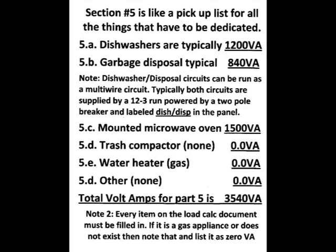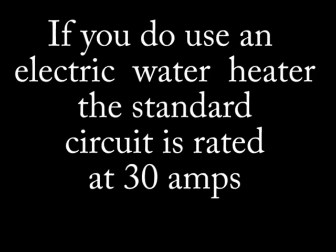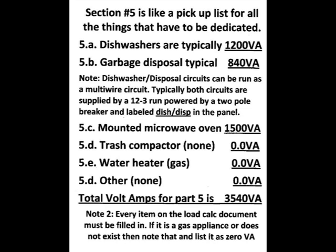Section 5 is like a pickup list for the things that have to be dedicated but aren't always listed on the load calcs, though they're required in the code book. Dishwashers are typically 1,200 volt amps. Garbage disposals are about 840 volt amps. Mounted microwave ovens are always 1,500 volt amps. Don't leave anything blank on your load calculation application — if you don't have it, just write 'none' and put in zero volt amps. No trash compactor: zero volt amps. Water heater is gas: zero volt amps. If you do use a water heater, rate it at 30 amps. Total volt amps for section 5 is 3,540.